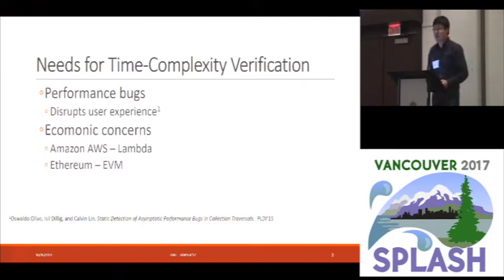And knowing the time complexity of your program can also be of great economic concerns. For example, in Amazon AWS, and particularly in a service called Lambda, Amazon charges you by the number of invocations you make to a certain service. So in order to know how much money your program will cost, you better know the number of such invocations your program makes. And also in the Ethereum framework, according to the EVM bytecode specification, every instruction requires certain amounts of gas to be evaluated. So you need to get an estimate of how much gas in total your Ethereum smart contract will cost in order to avoid run out of gas exceptions.